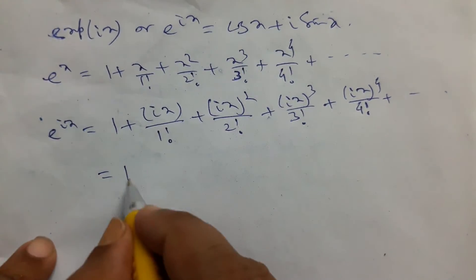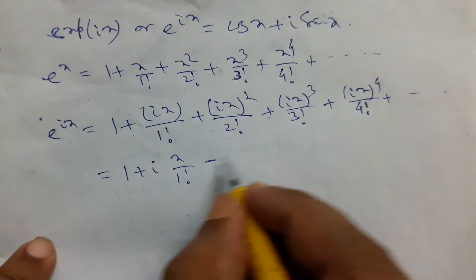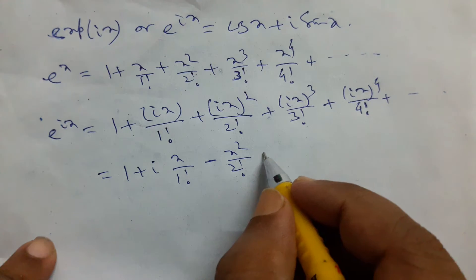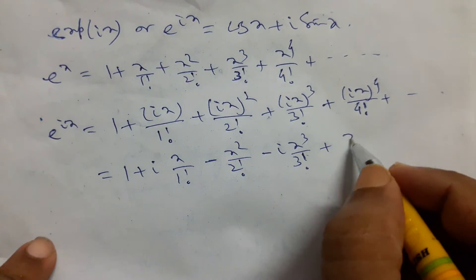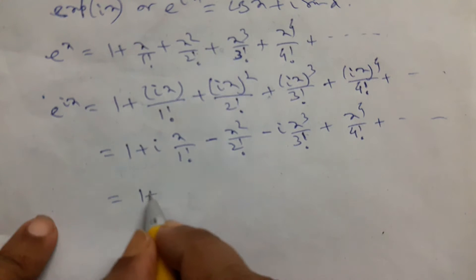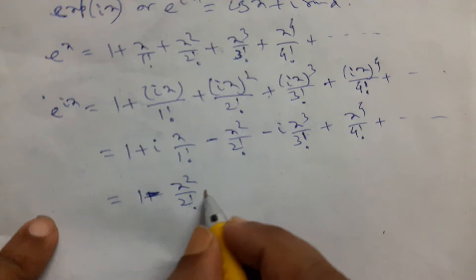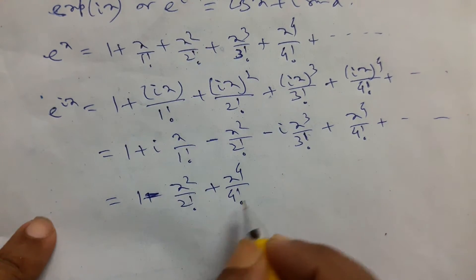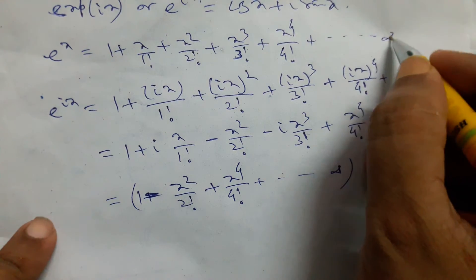Splitting the terms: i squared equals minus 1, so x squared by 2 factorial becomes negative. i cubed equals i squared times i, which is minus i, so we get minus x cubed by 3 factorial. i to the power 4 is 1, giving x to the power 4 by 4 factorial. Separating into real and imaginary parts, the real part is 1 minus x squared by 2 factorial plus x to the power 4 by 4 factorial plus dot dot dot, up to infinity.